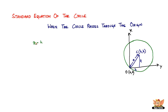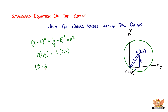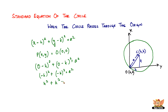The standard equation is (x − h)² + (y − k)² = a². In this case, P(x, y) is the origin (0, 0), so we substitute: (0 − h)² + (0 − k)² = a². This gives (−h)² + (−k)² = a², which simplifies to h² + k² = a². So h² + k² = a² is the standard equation of the circle when the circle passes through the origin.